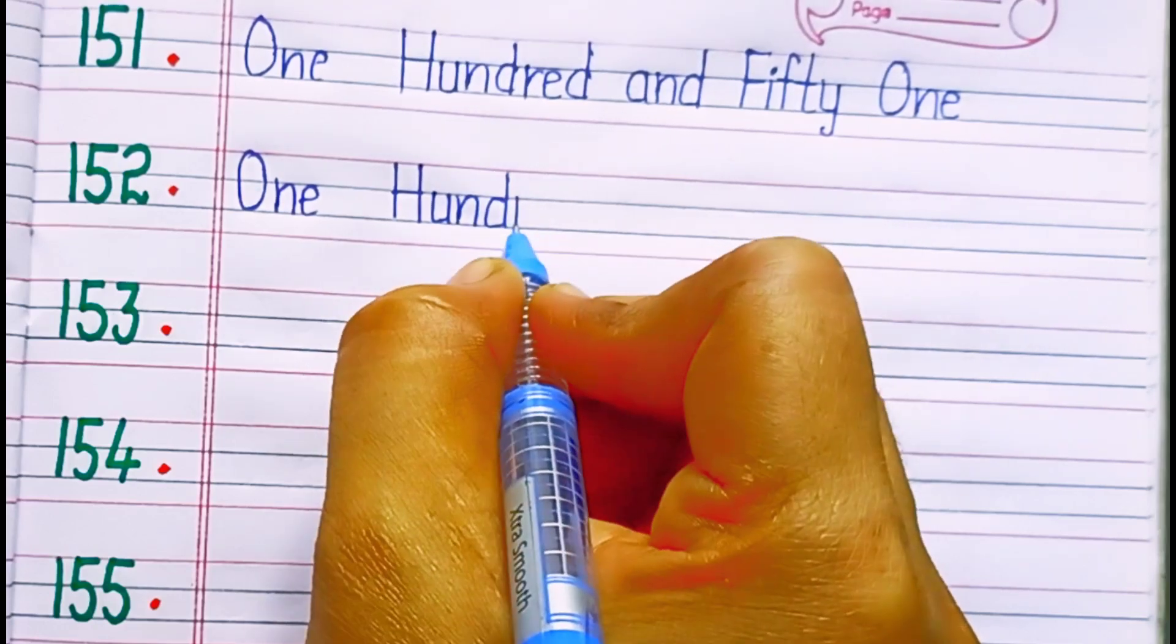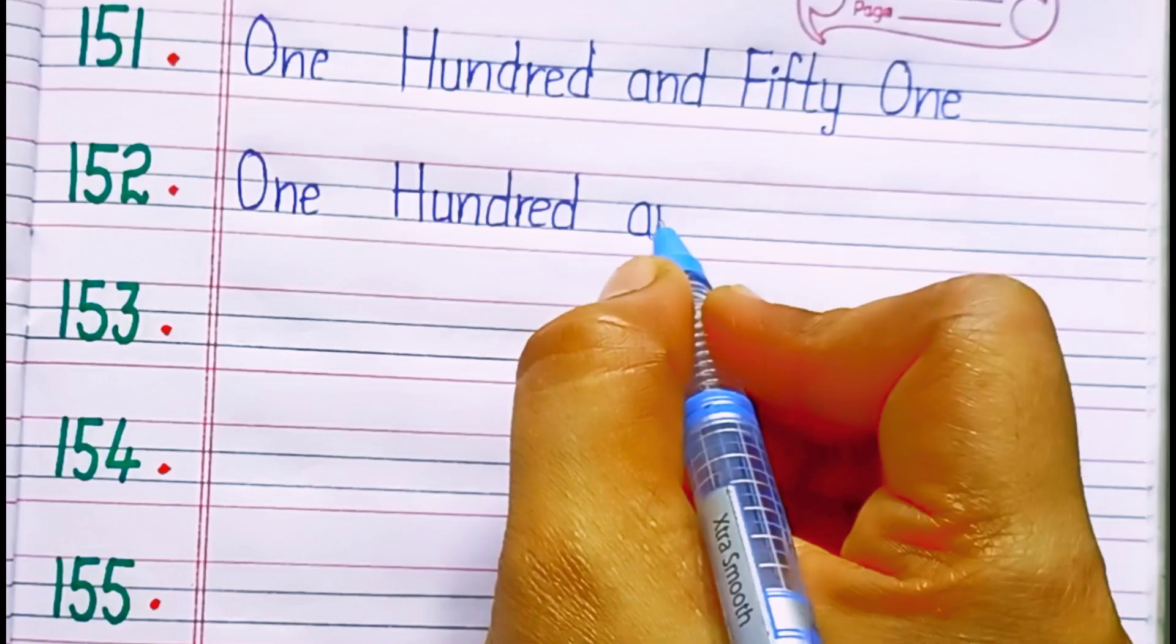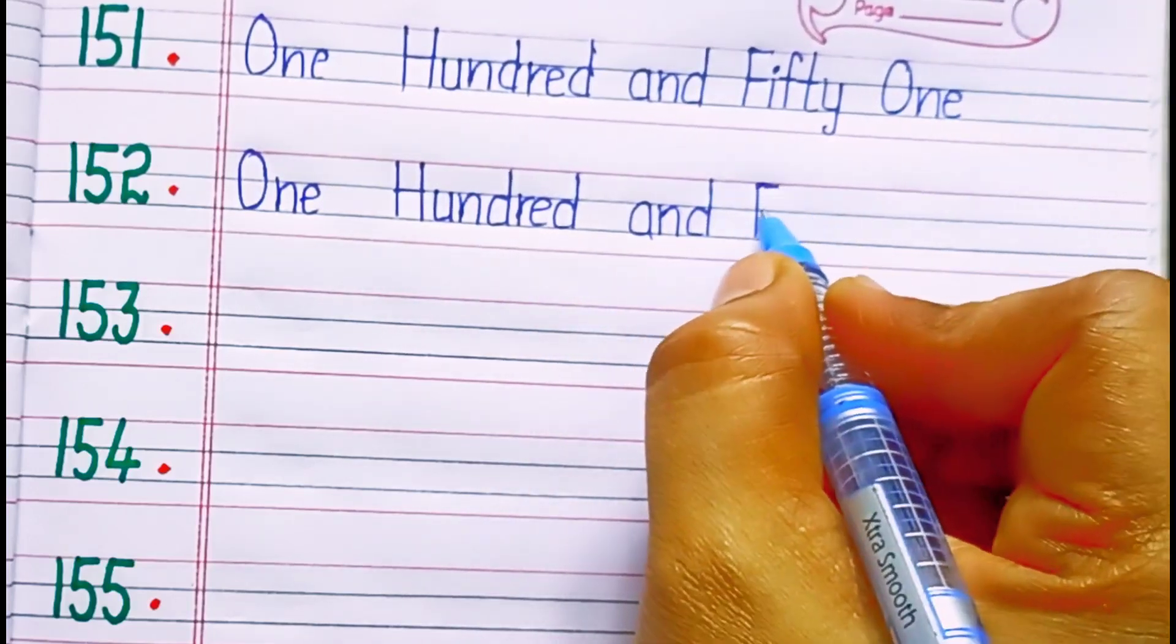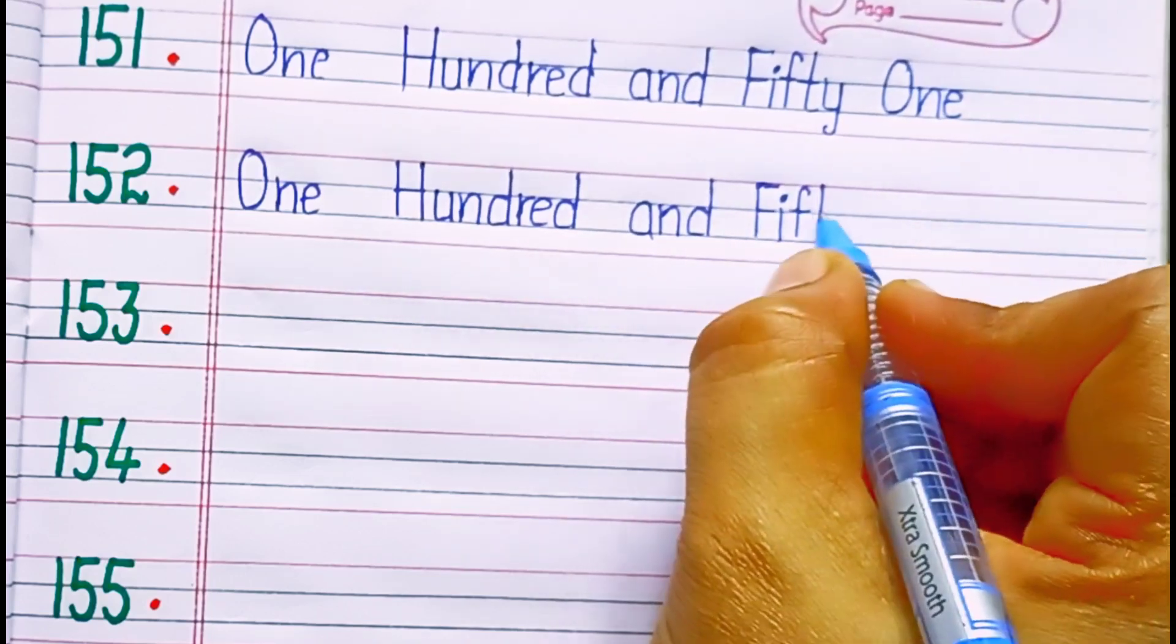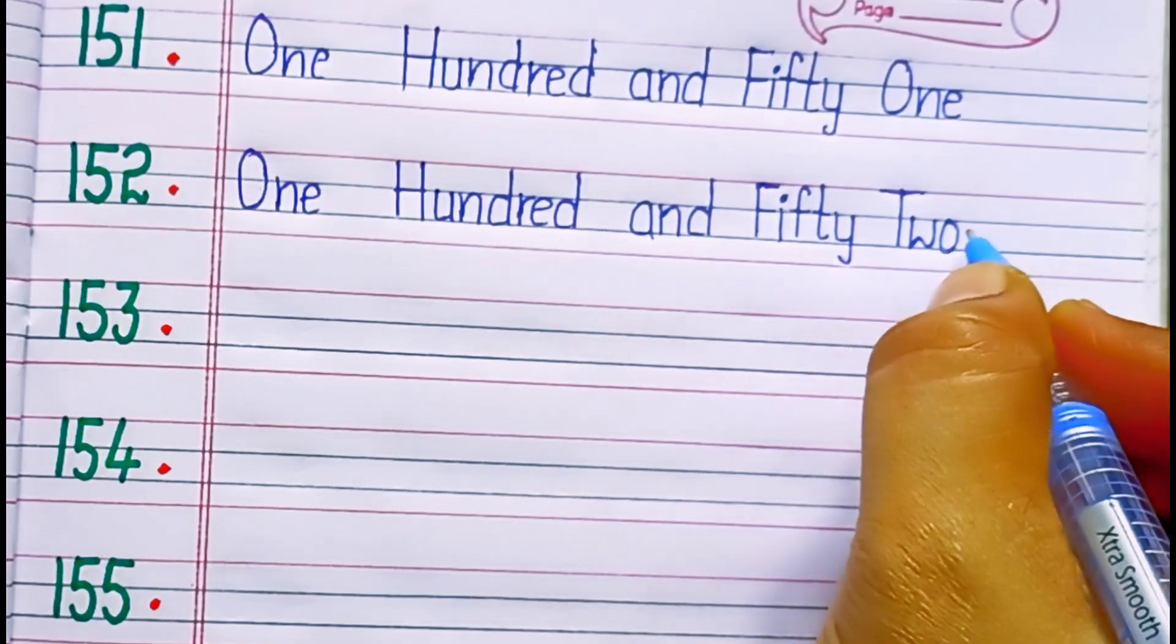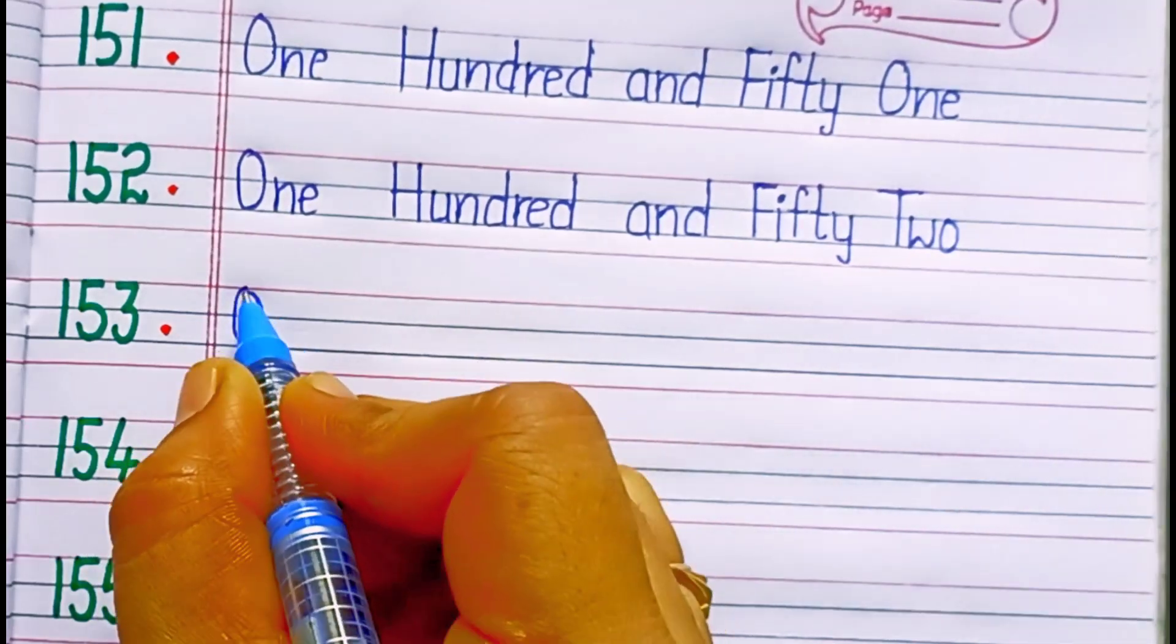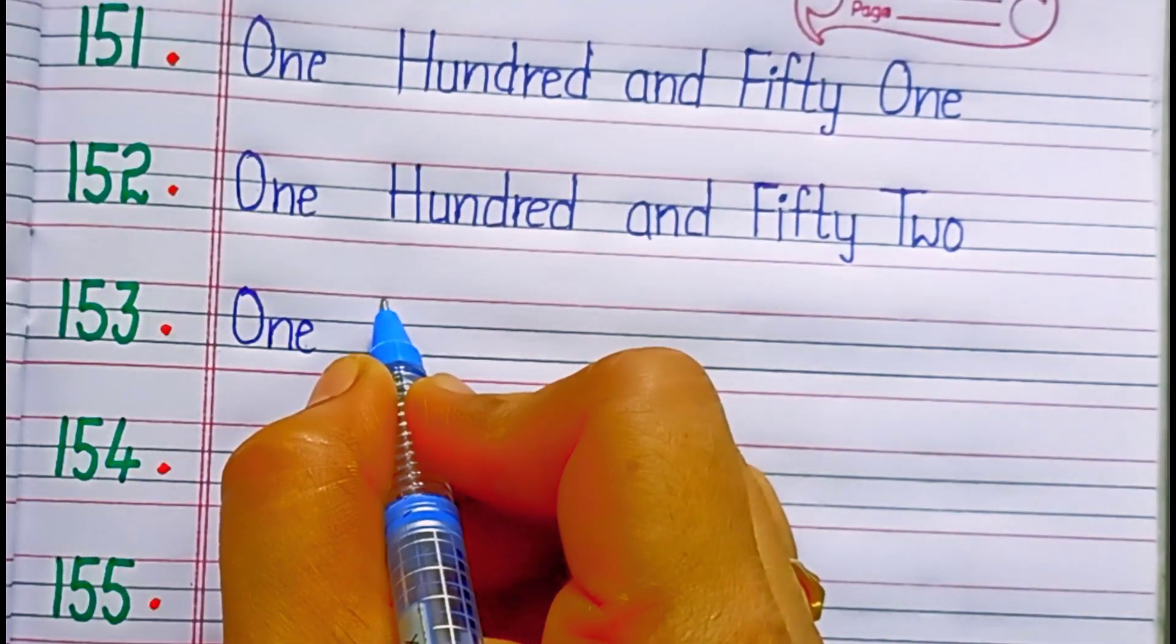F-I-F-T-Y, 50. O-N-E, 1, 51. One hundred and fifty-two. One hundred and fifty-two. F-I-F-T-Y, 50. T-W-O, 2, 52. One hundred and fifty-three. One hundred and fifty-three.